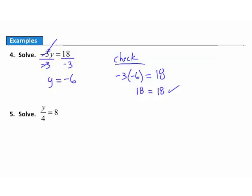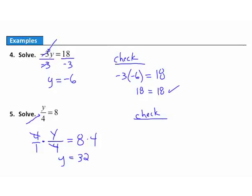Example 5. We're asked to solve this equation where what's keeping y from being all alone is this division by 4. To undo division by 4, I multiply by 4. On the left side, I write 4 as the fraction 4 over 1 so the common factors of 4 divide out, leaving y over 1, which is y. On the right, 8 times 4 is 32. Checking: substituting 32, 32 divided by 4 is 8, and the right side was already 8. That answer checks.